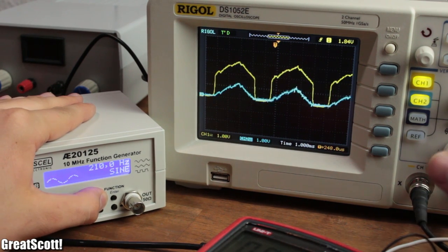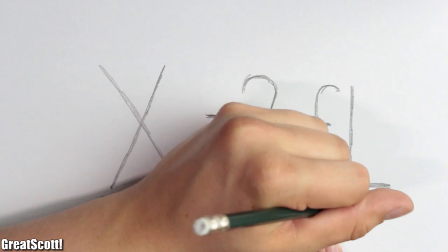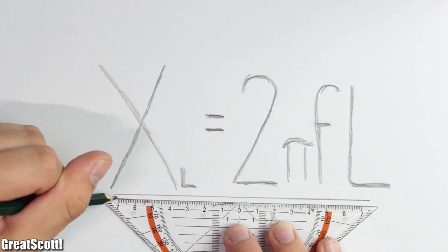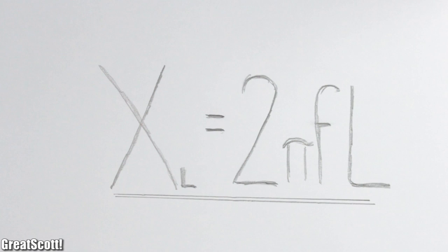The final formula to calculate the inductive reactance looks like this: 2 pi multiplied by the frequency multiplied by the inductance.